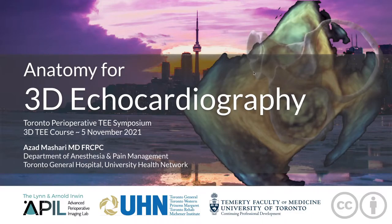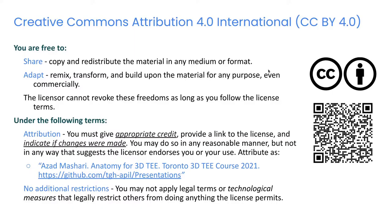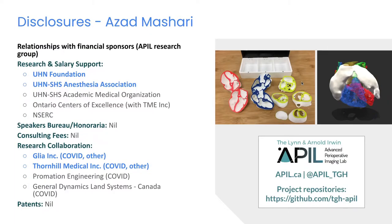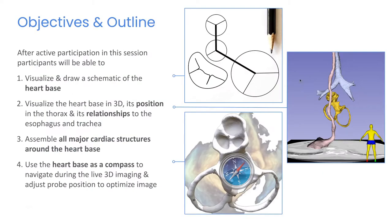We're going to start off today by talking about a review of cardiac anatomy specifically for 3D ECHO. All the content here is under Creative Commons license and we'll post a link in the chat. These are my disclosures. I'm going to rely pretty heavily here on the powerful 3D visualizing abilities of our brains. My goal here is to help you memorize and visualize the structure of the heart base in three dimensions, and to use it to rapidly orient yourself when looking at ECHO images, especially 3D datasets.